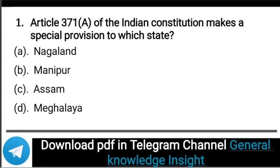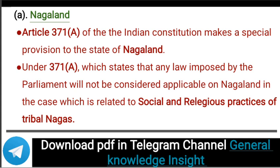The first question is: Article 371 of the Indian Constitution makes a special provision to which state? The answer is option A, that is Nagaland. Article 371A of the Indian Constitution makes a special provision to the state of Nagaland. Under Article 371A, any law imposed by the parliament will not be considered applicable on Nagaland in cases related to the social and religious practices of tribal Nagas.